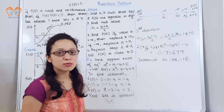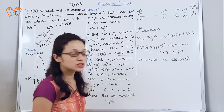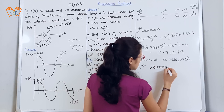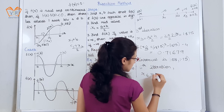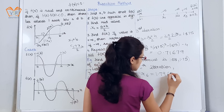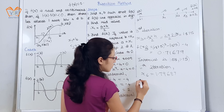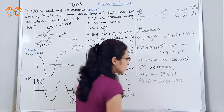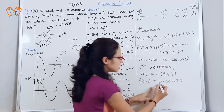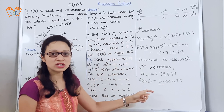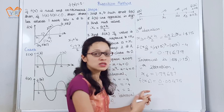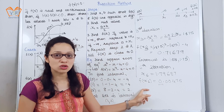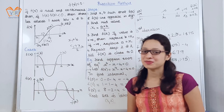If you continue the process for more iterations, at the end of the sixth iteration you will get x6 = 1.79687, and f(x6) = 0.00475. As you can see, f(x6) is almost close to 0, so you can stop the procedure here. If you want, you can still find more iterations to get the function value even closer to zero. Hope you understood the concept — thank you.